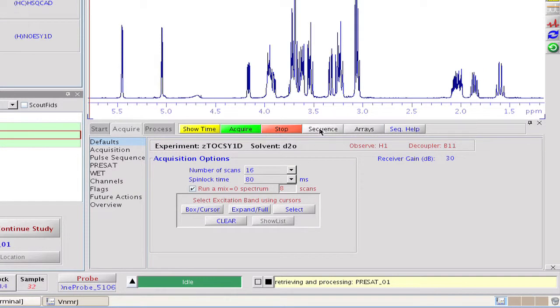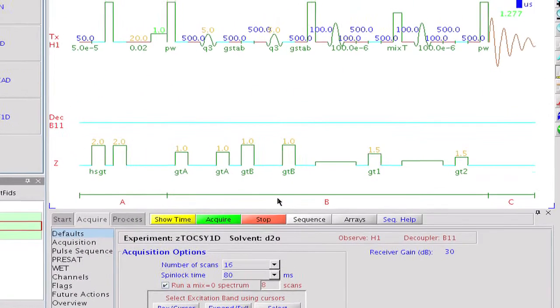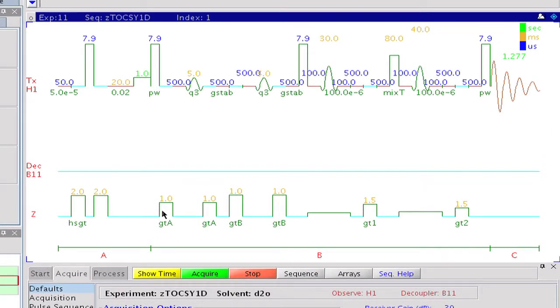In this particular implementation, selective excitation is achieved by a double-pulsed field gradient spin echo block incorporating two selective refocusing pulses on the target proton signal. It is followed by a Dipsy mixing sequence that transfers magnetization from the target proton to its scalar coupling partners. Mixing is flanked by two zero-quantum suppression elements that filter out signals of a competitive process that frequently causes multiplet distortions.